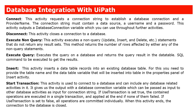The Connect activity needs to know which database to connect to and what the provider name is, because for different providers it has to perform different operations. In 100% of cases, you have to provide a connection string, which can be built inside UiPath Studio or supplied by your database team. It must contain a data source, username, and password. This activity returns a database connection variable — a data connection object — which will be used by all other activities.